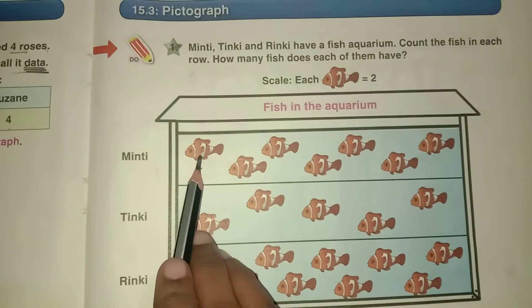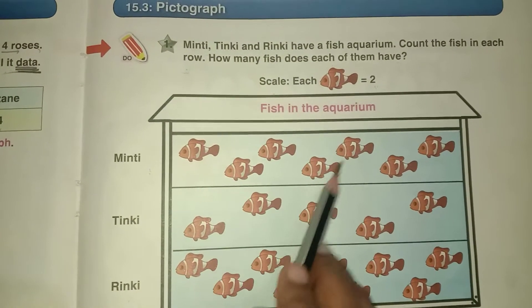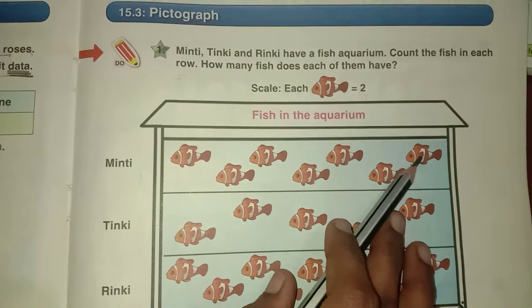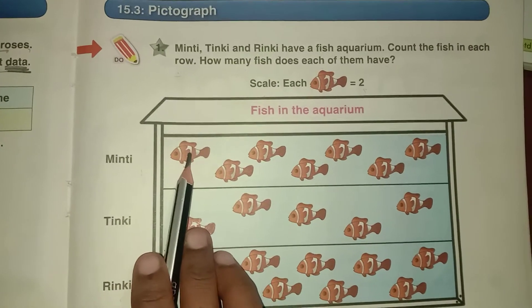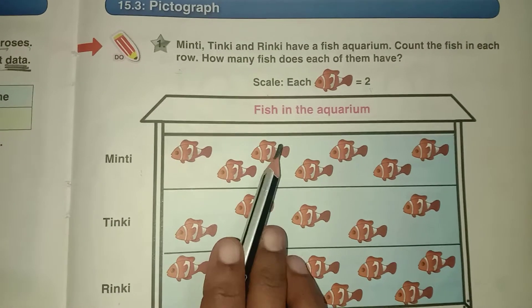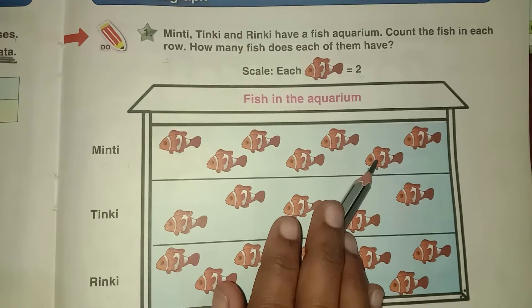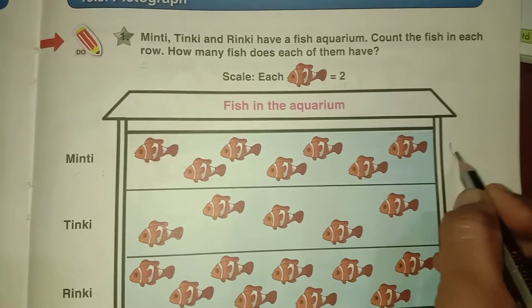Minty had 1 fish is equal to 2, means 1, 2, 3, 4, 5, 6, 7. 7 means 7 into 2, 14. Means 1 fish is equal to 2. 2 plus 2 is 4, 4 plus 2 is 6, 6 plus 2 is 8, 8 plus 2 is 10, 10 plus 2 is 12, 12 plus 2 is 14. Minty had 14 fish.